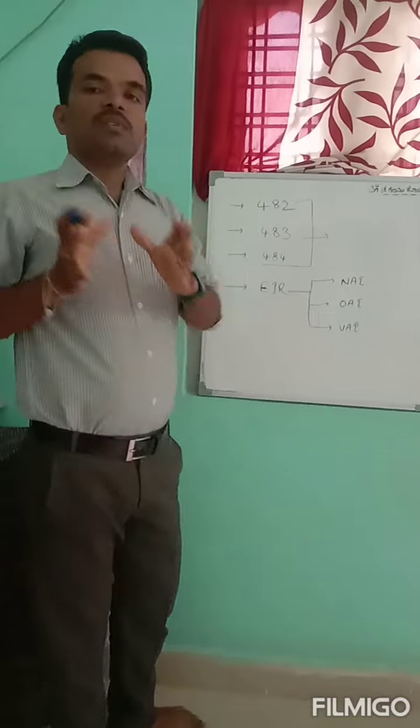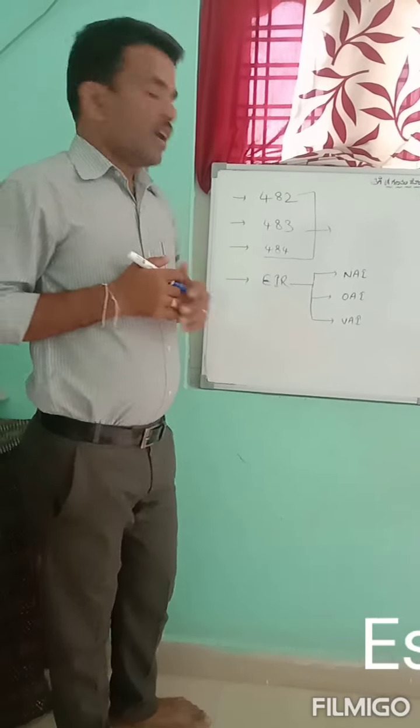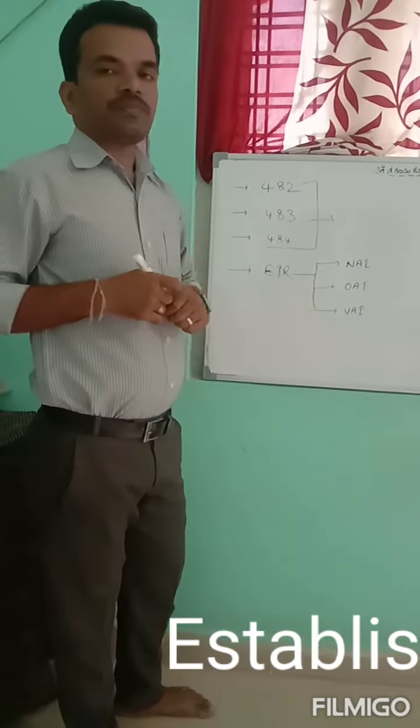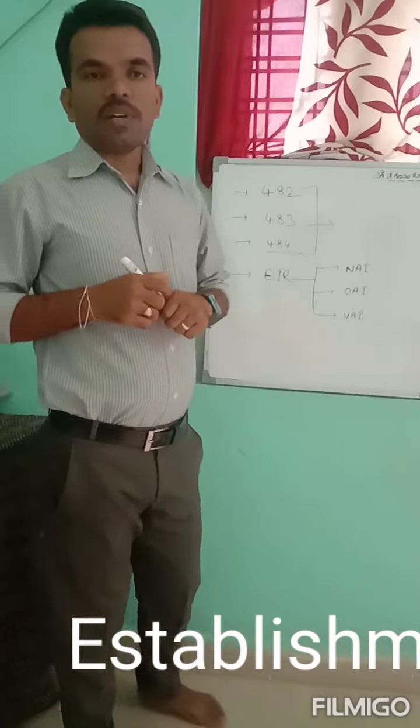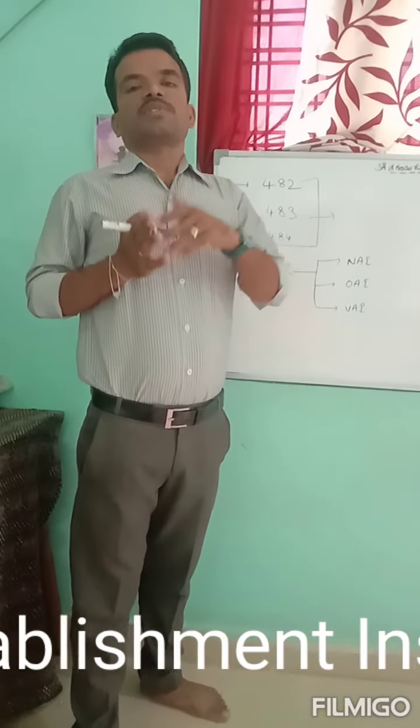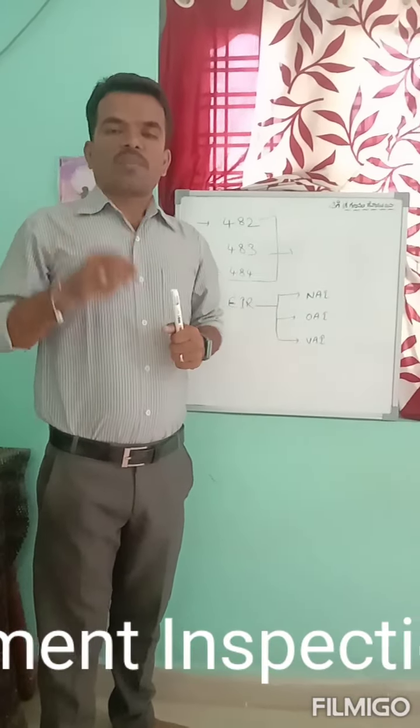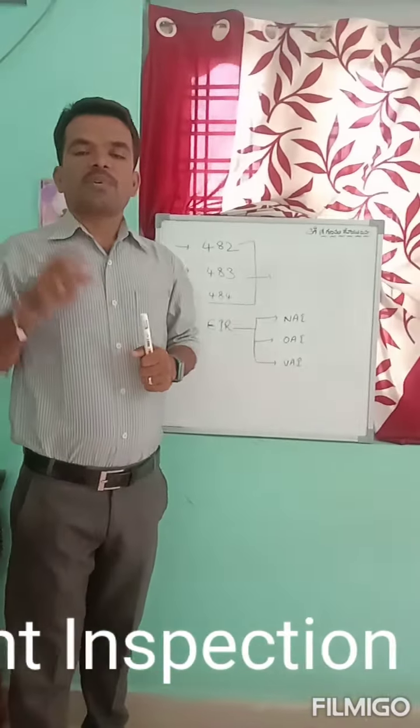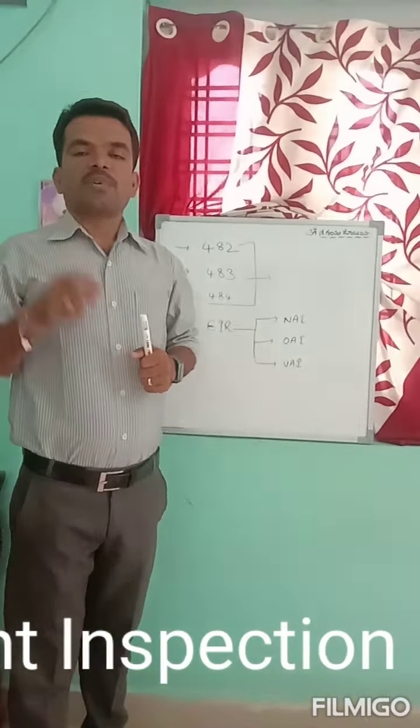After the inspection, they will prepare a report called the Establishment Inspection Report, also known as EIR. This Establishment Inspection Report is of three types: NAI, OAI, and VAI.